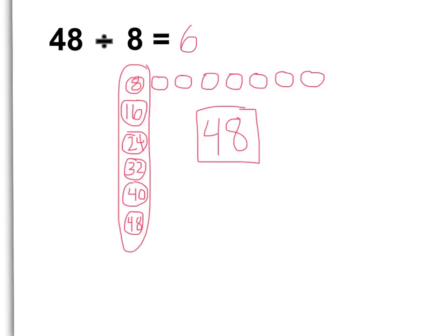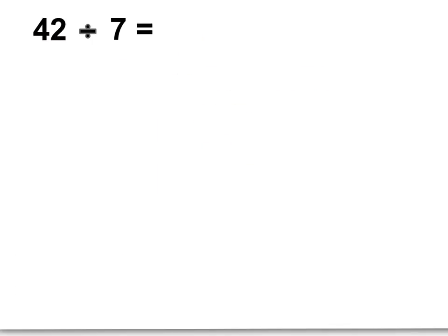Let's do one more together. Here we have 42 divided by 7 equals something. Now, if I look at this equation, I know that I have 42. And, when I make my whole array, I would have 42 dots. Now, this time, I don't have rows of 8. What do I have? That's right. I have rows of 7. So, let's start by making one row of 7.